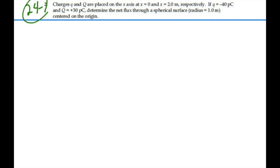Let's take a look at what this might look like. We're going to have a charge, a negative charge, at the origin, little q. And that charge is equal to negative 40 picocoulombs. And then at x equal 2, we have a positive charge.